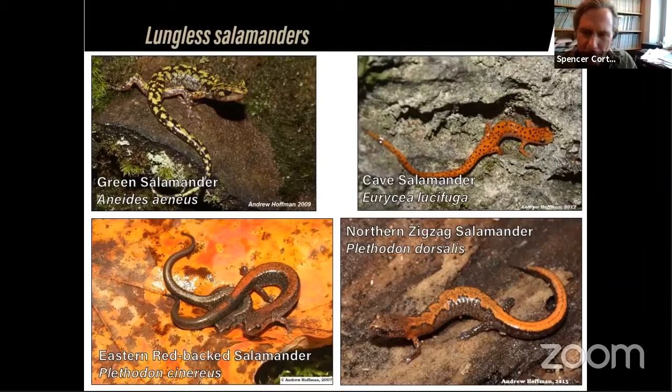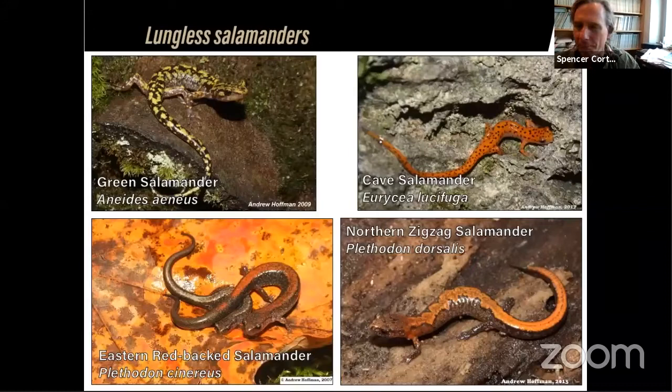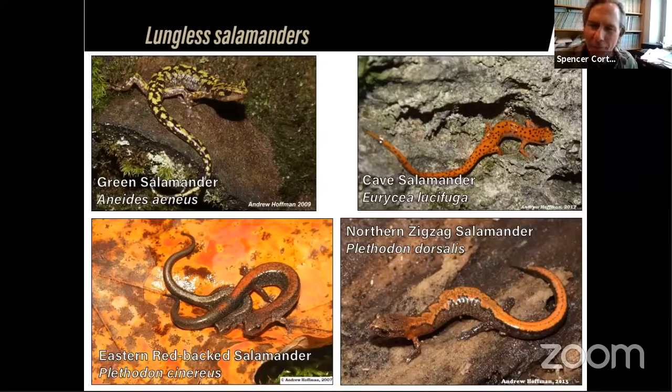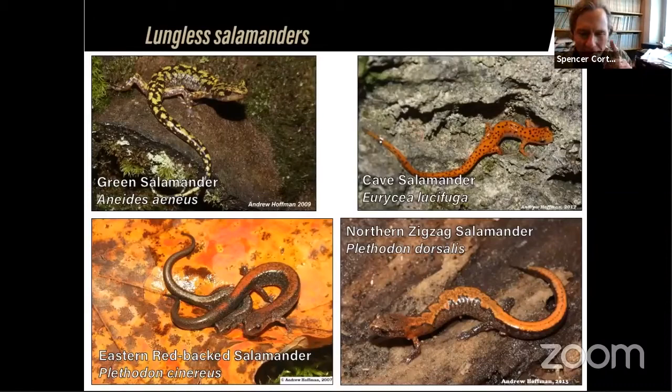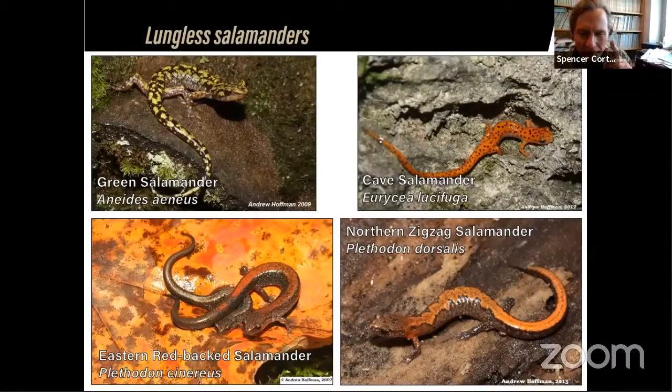Redback and zigzag salamanders never go in water — they lay their eggs under moist rotting logs or in thick leaf litter. One time I picked up a discarded coke bottle in the woods and found a bunch of redback salamander eggs underneath it — so I had to leave the trash there for once. The zigzag salamander seems to live in slightly drier places than the redback but is otherwise very similar. The cave salamander is found mostly in karst regions and will breed in nearby streams, spending time on land but associated with caves.